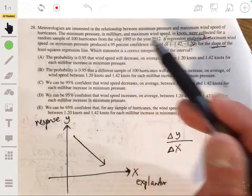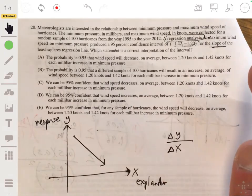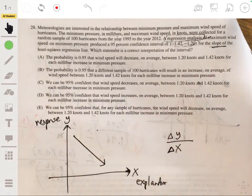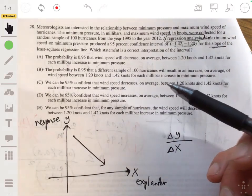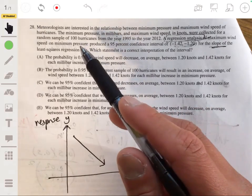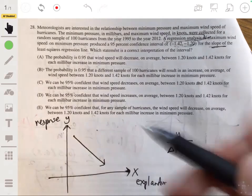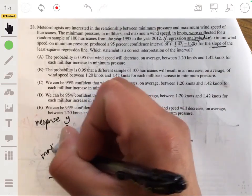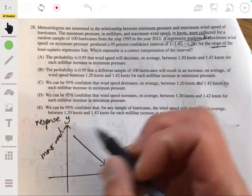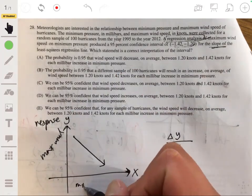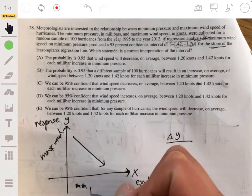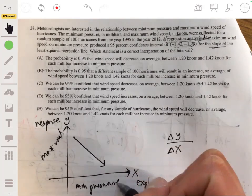You don't really have to worry about the 95% and all that, all those techniques, no calculations, in other words. Like, it's really just about interpreting this correctly. So the maximum wind is gonna be the Y or the response, and then the minimum pressure will be the X.